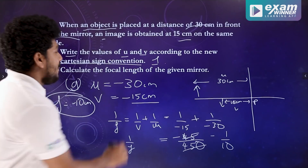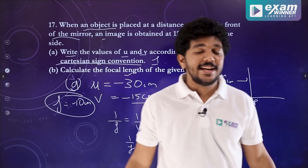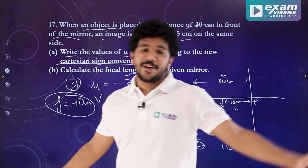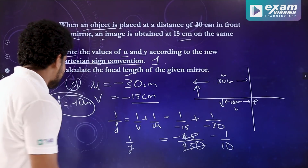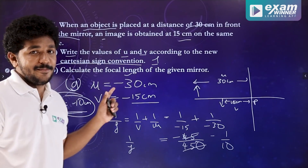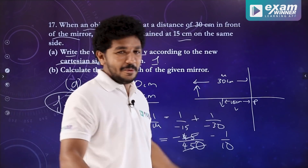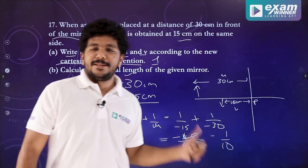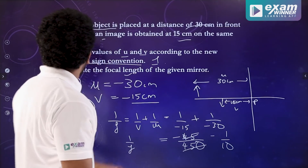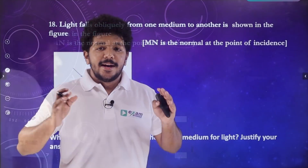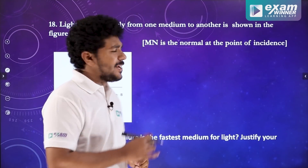If you are doing this calculation, you get the focal length as minus 10 cm. Then you mark it. Then you do minus 10 as the answer. Then we will answer the 17th question and the 18th question.